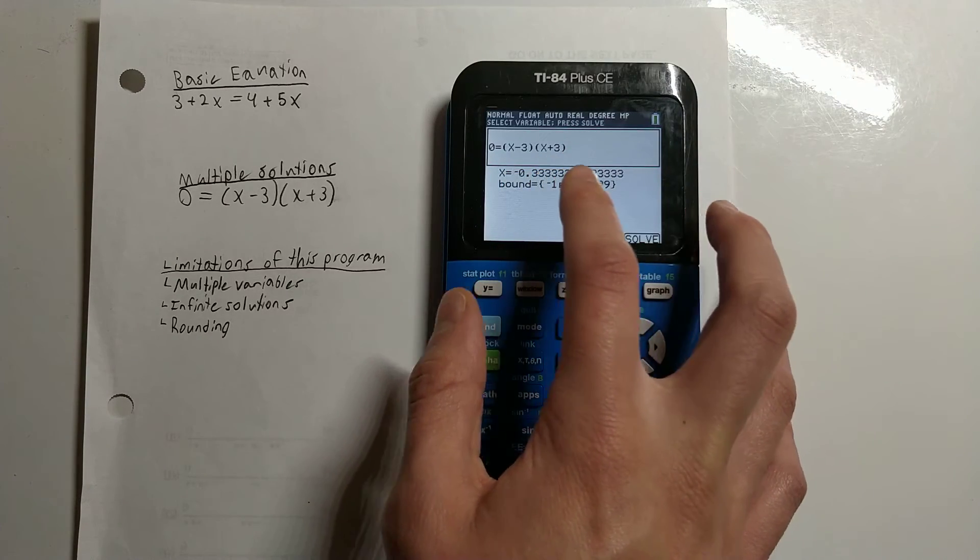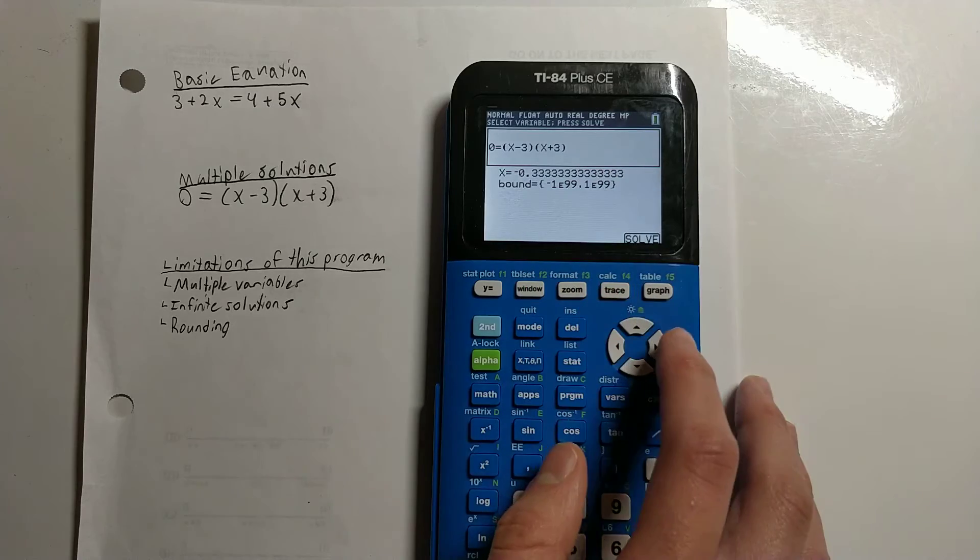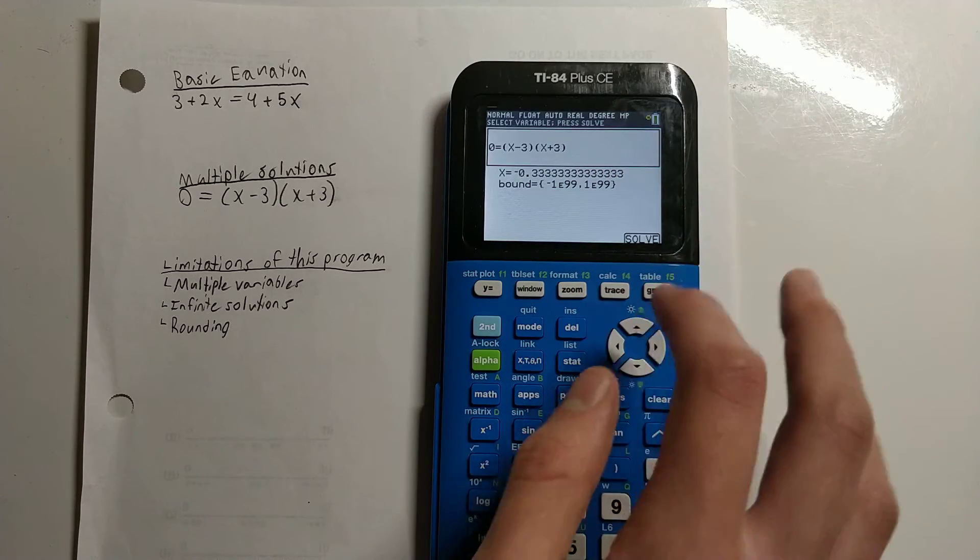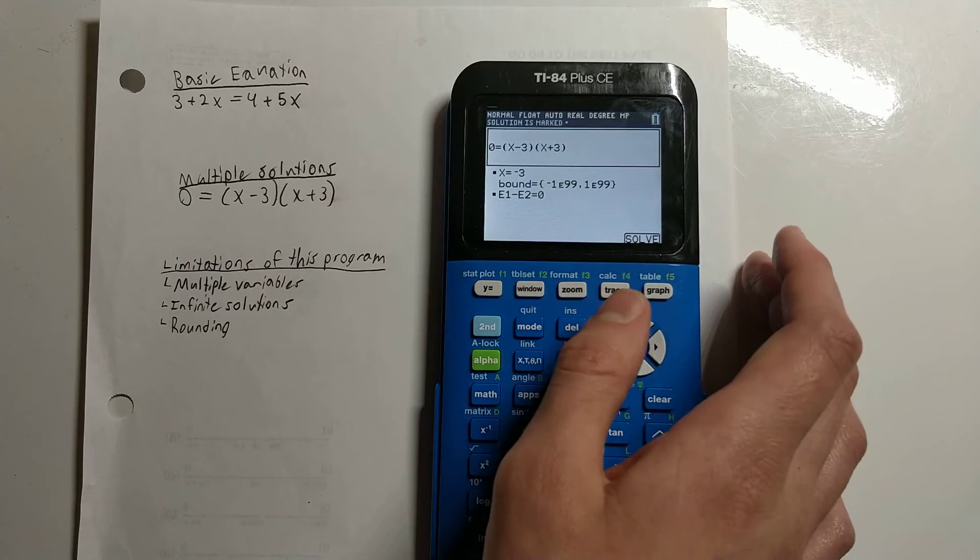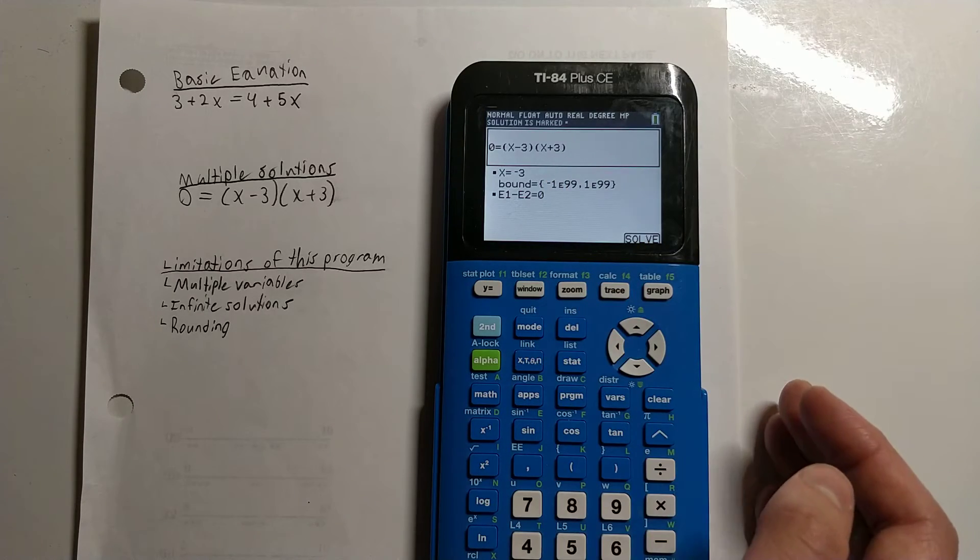Since this is not necessarily the correct answer, we find the correct answer by selecting Solve. And it tells us x is equal to -3. So what happened to x=3?